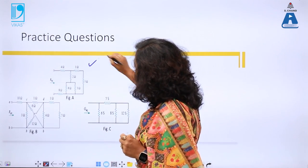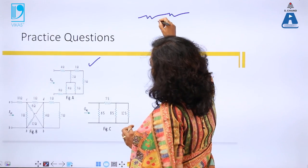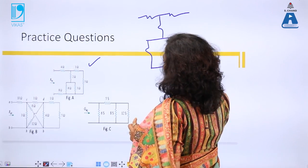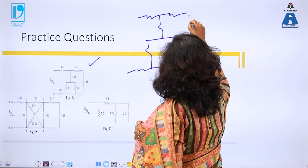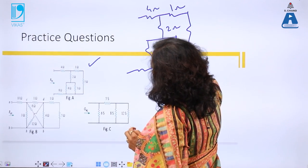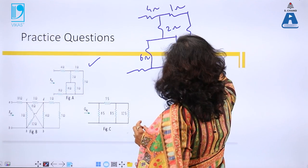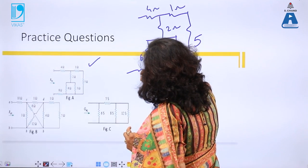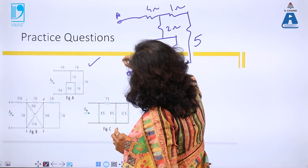I'll redraw the circuit more clearly for practice on series-parallel resistance. The circuit has 4 Ω, 1 Ω, 2 Ω, and then 6 Ω and 3 Ω in parallel, plus an 8 Ω resistance. I need to find the total resistance between terminals A and B.